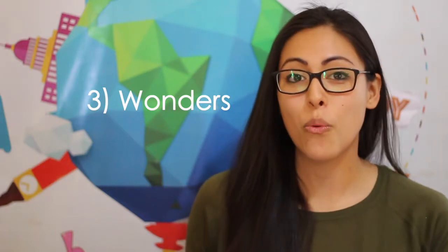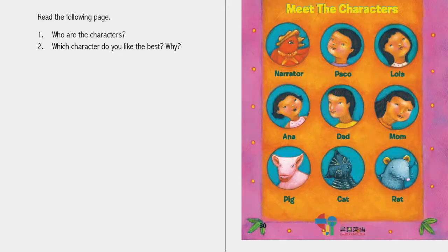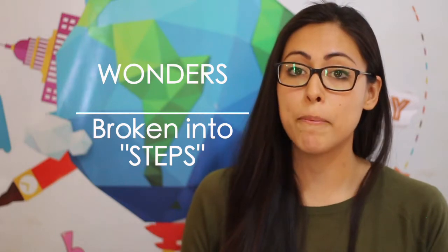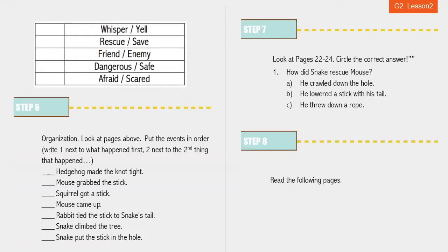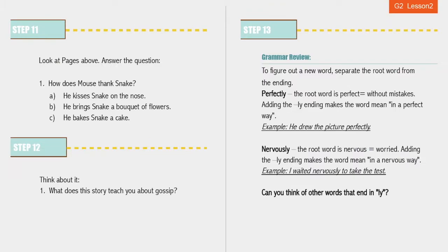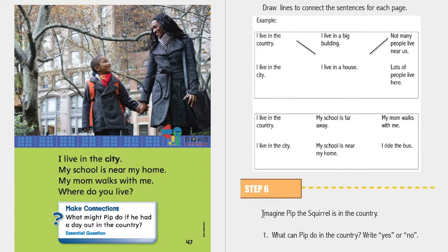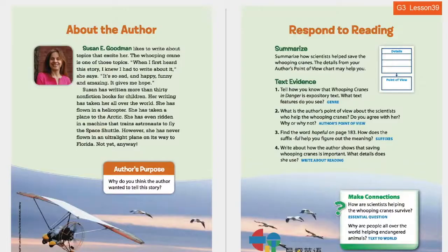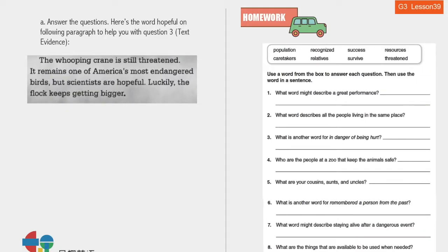That brings us to our third course material: Wonders. Wonders is composed of fiction as well as non-fiction and is formed with the objective of helping your student read as well as expand their vocabulary. Wonders lessons are broken up into steps — each lesson can have anywhere from 6 to 13 steps. Most steps ask the student to read, then answer a series of questions or do exercises. Read, answer, read, answer — this is the pattern repeated throughout the Wonders series.